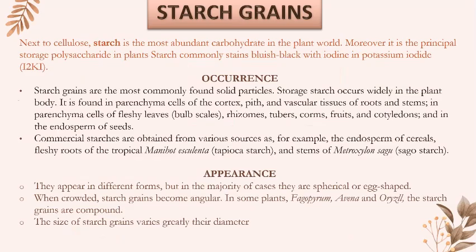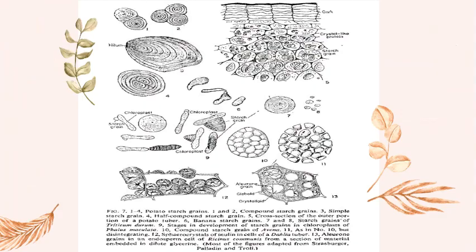Starch grains are the most commonly found solid particles in parenchyma cells of the cortex, fleshy leaves, and in the endosperm of seeds. They appear in different forms, but in the majority of cases they are spherical or egg-shaped. Here are some examples of starch grains.